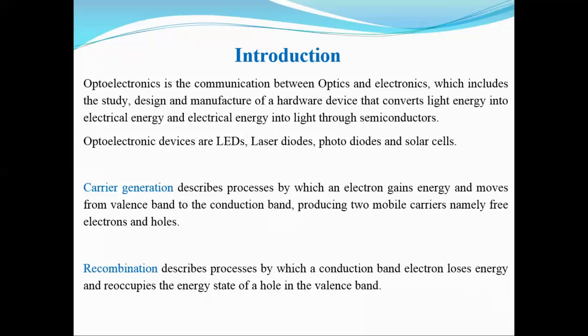The carrier recombination process is a process in which a conduction band electron loses its energy and reoccupies the energy state of a hole in the valence band. If the energy is released in the form of photons, it is called a radiative recombination process. If the energy is released in the form of phonons, it is called a non-radiative recombination process.